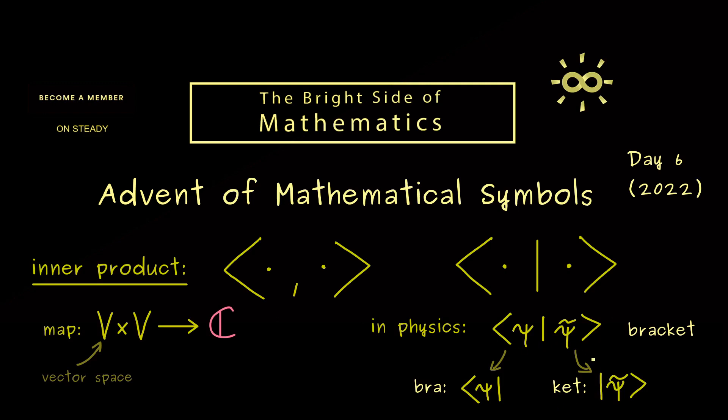In short you can just say this is another way to explain the inner product. In physics this is usually called the Dirac notation. And if you want to learn more about this and inner products, I have a whole functional analysis course you can watch.